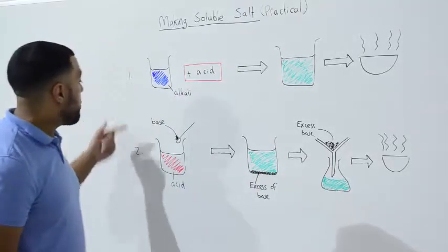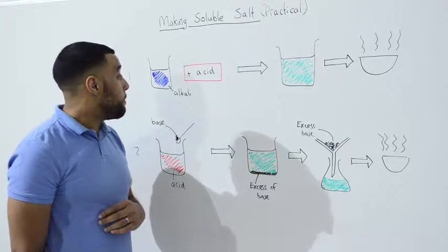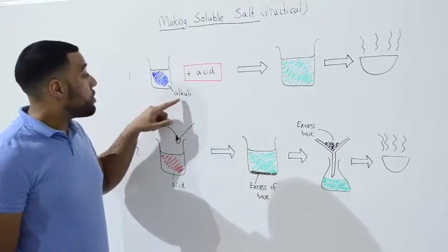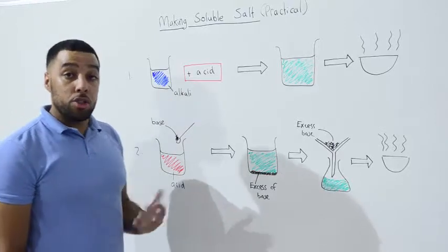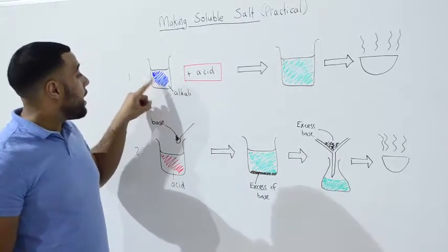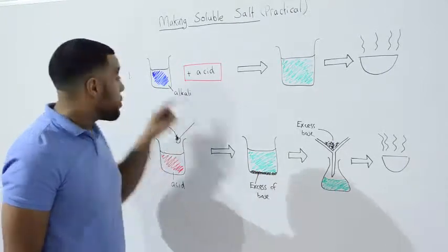There are two different ways of producing a soluble salt, and we're going to go through both of them. The top example is if we were to use an alkali, which is just a soluble base. You can see the alkali, I've just shaded it in blue because that's the colour it will turn universal indicator.